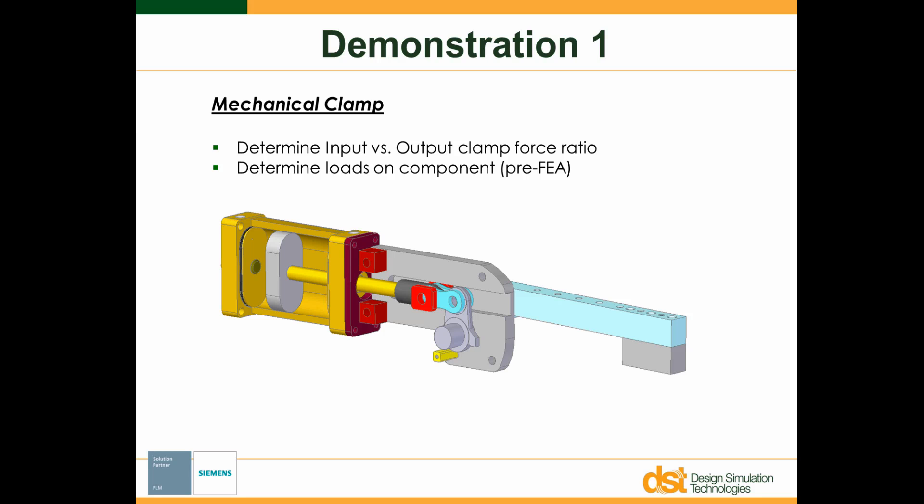In this demonstration of Dynamic Designer, we're going to simulate a simple clamp mechanism. There are two main objectives for the simulation. The first is to determine the input-to-output clamp ratio, and the second is to transfer the loads from a critical component into a Solid Edge simulation FEA study.